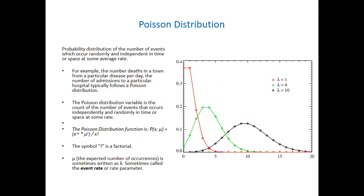Poisson distribution is the probability distribution of a number of events which occur randomly and independently in time or space at some average rate. For example, the number of deaths in a town from a particular disease per day, or the number of admissions to a particular hospital typically follow a Poisson distribution.